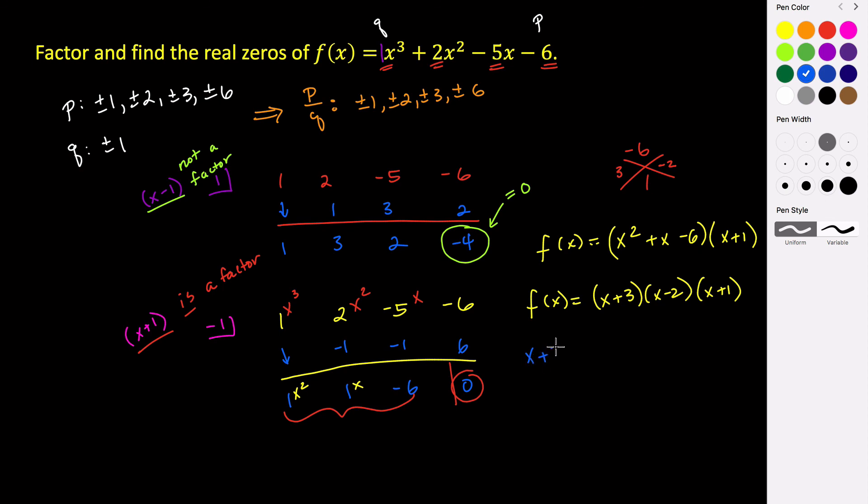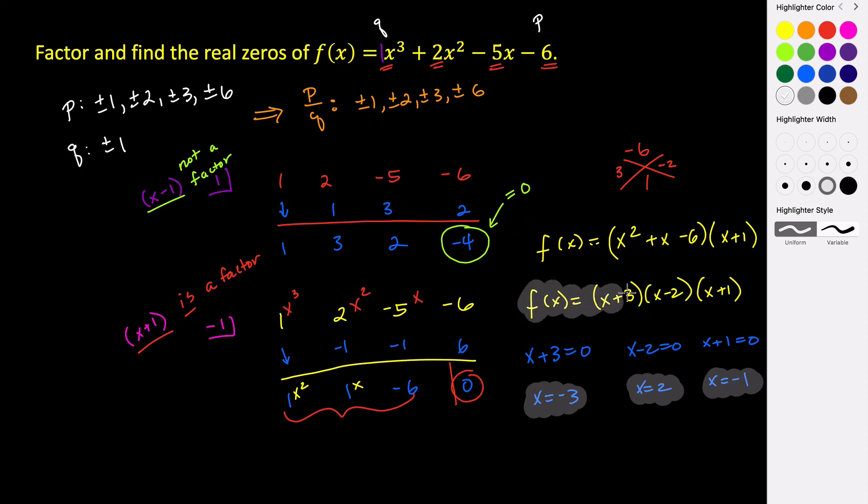And then to find the zeros from these, we just take each of these three factors and set them equal to zero. So x plus three equals zero, x minus two equals zero, and x plus one equals zero. So we get that x equals negative three, x equals two, and x equals negative one. So these would be our zeros, and this here is our factored form.